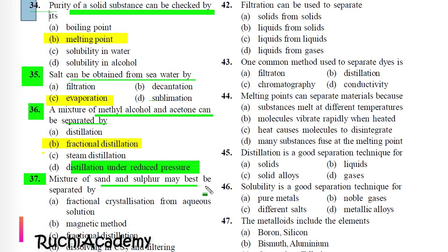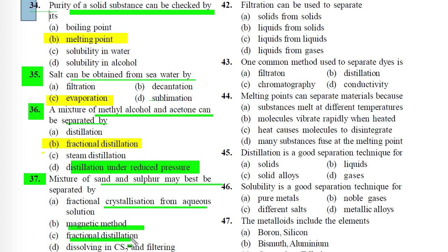Question 37: A mixture of sand and sulfur may best be separated by: A) Fractional crystallization from aqueous solution, B) Magnetic method, C) Fractional distillation, D) Dissolving in carbon disulfide and filtering. Correct answer is D. Sulfur gets dissolved in carbon disulfide and separated out as filtrate, while sand is collected on filter paper as residue.